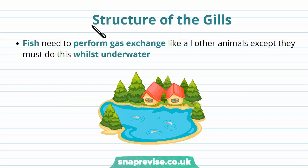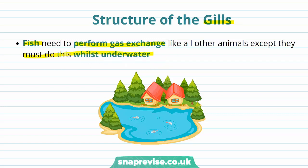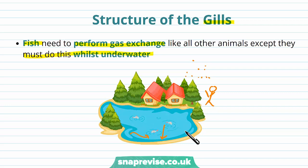Before we can understand how fish exchange gases with their environment, we need to understand the structure of the organ which does this. In fish that have skeletons or bones, they use organs called gills. Fish need to perform gas exchange just like any other animals, except they have to do this whilst they live underwater. For humans, we just exchange gases with the air. However, for fish, they cannot access this air very well because they're underwater, therefore they have to absorb gases that are dissolved in the water, and they have different organs that do this.